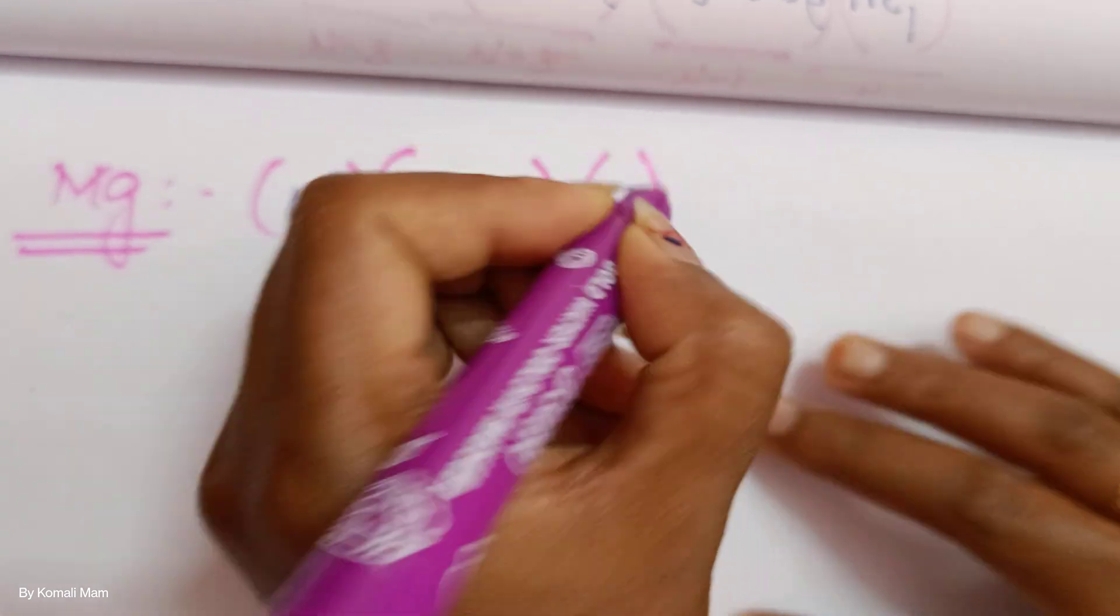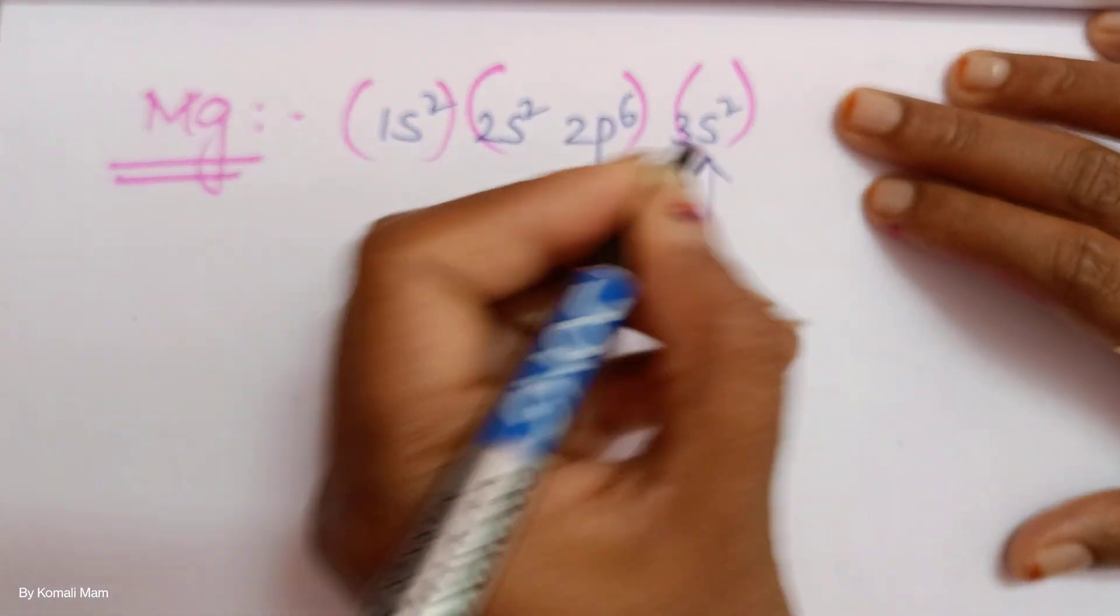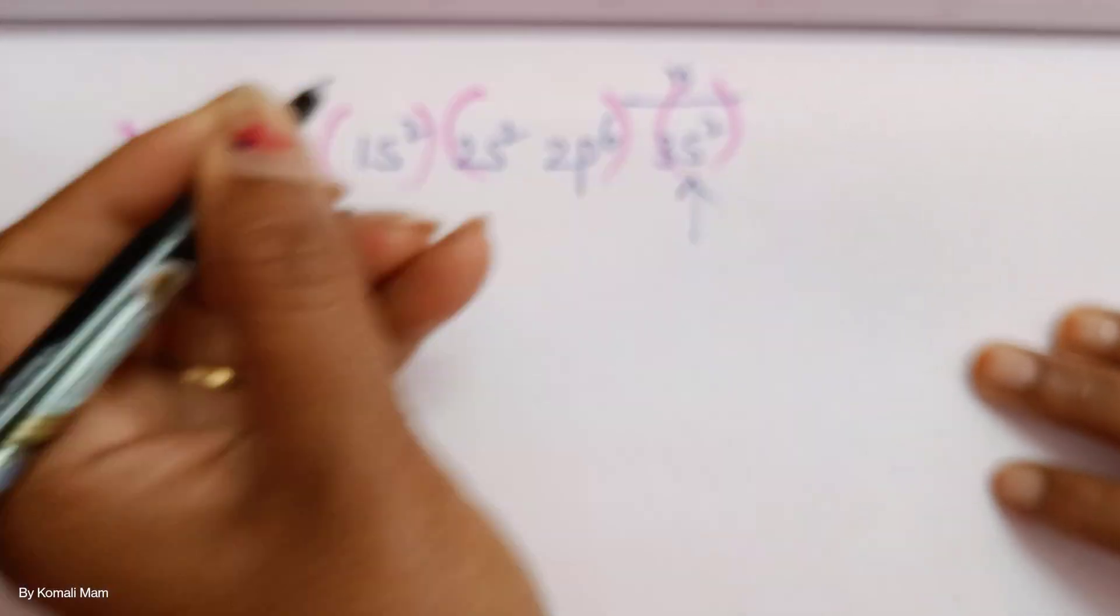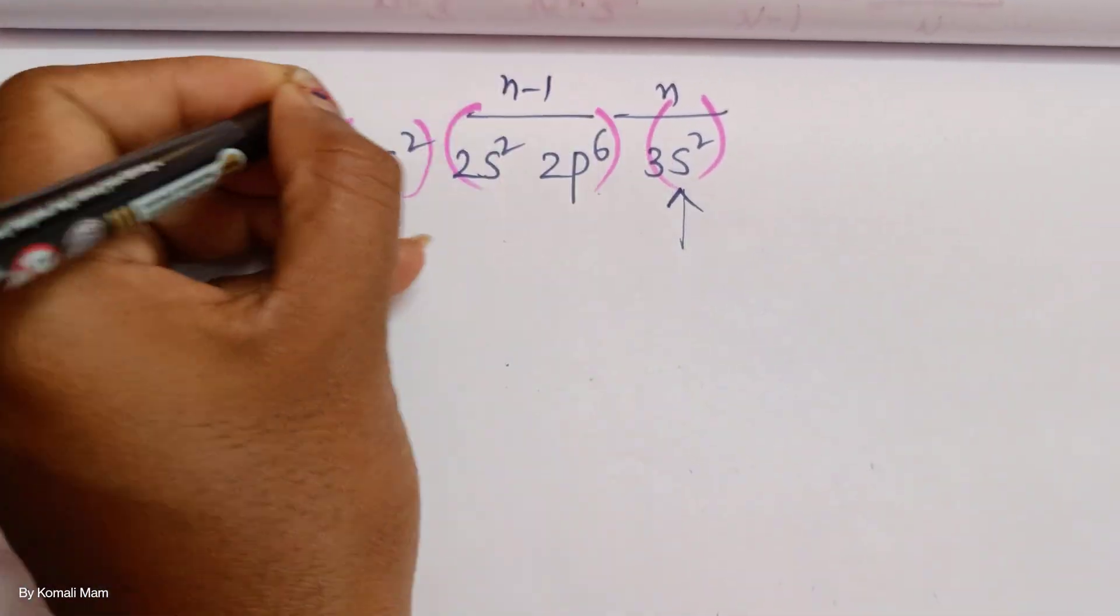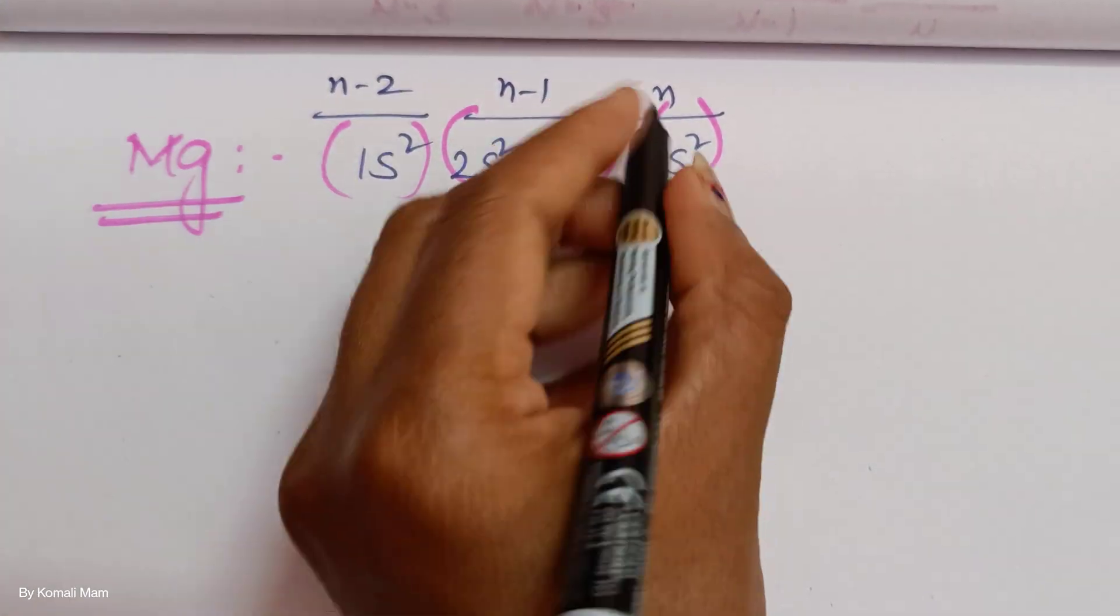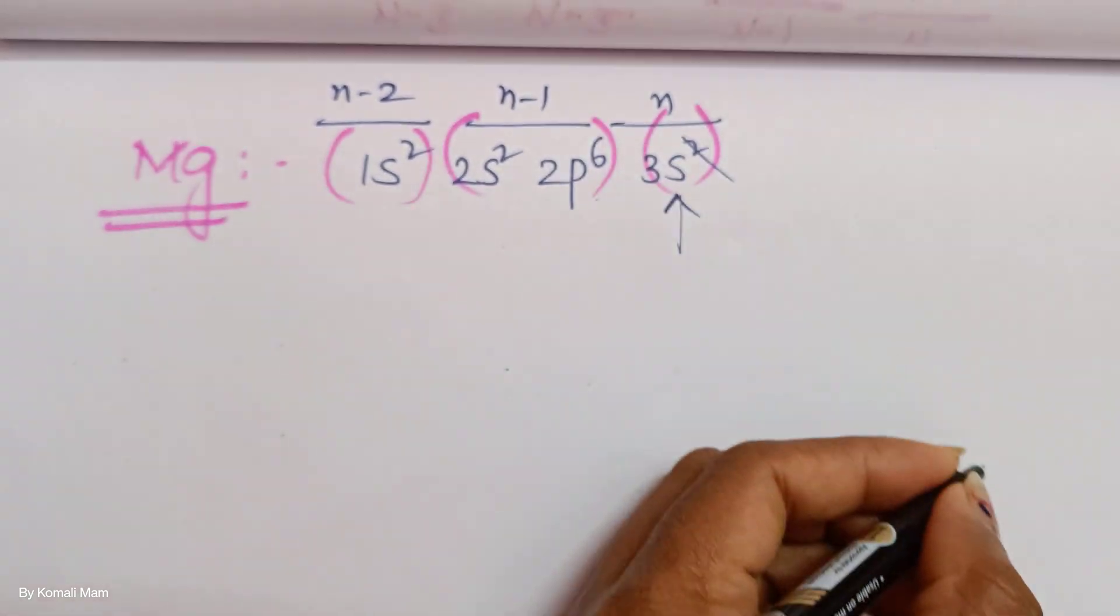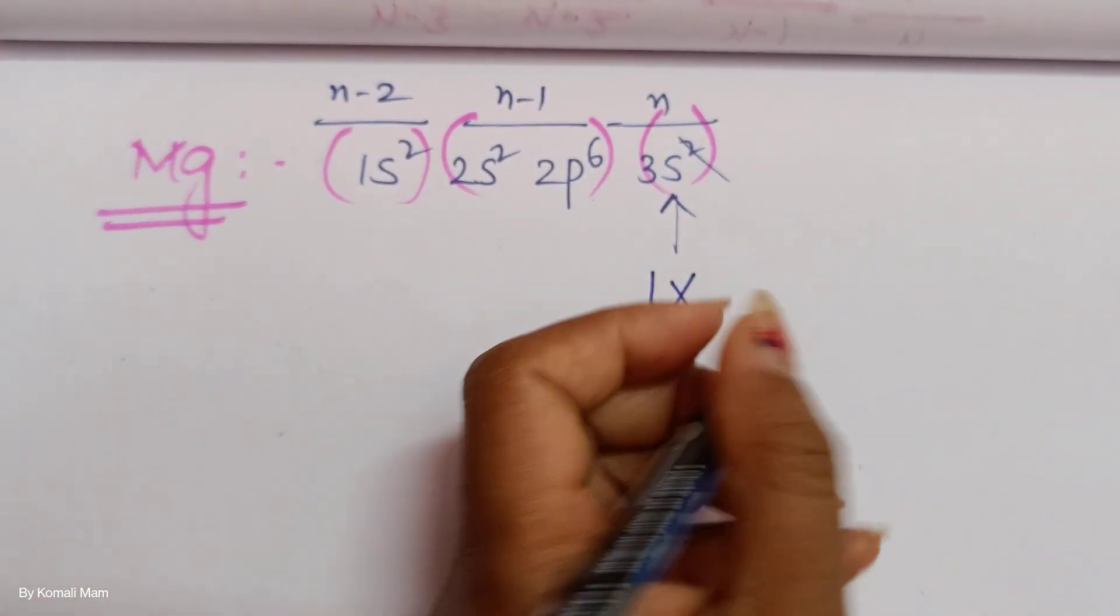How will you group? Like this. Then you are counting for S electron. This is which shell? Nth shell. This is N minus 1, this is N minus 2. Nth shell, you are counting for this last electron. One electron is left.